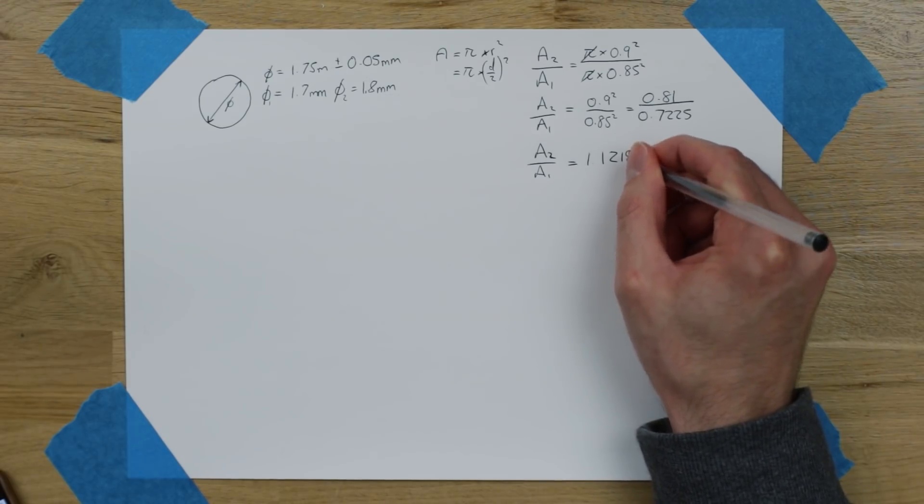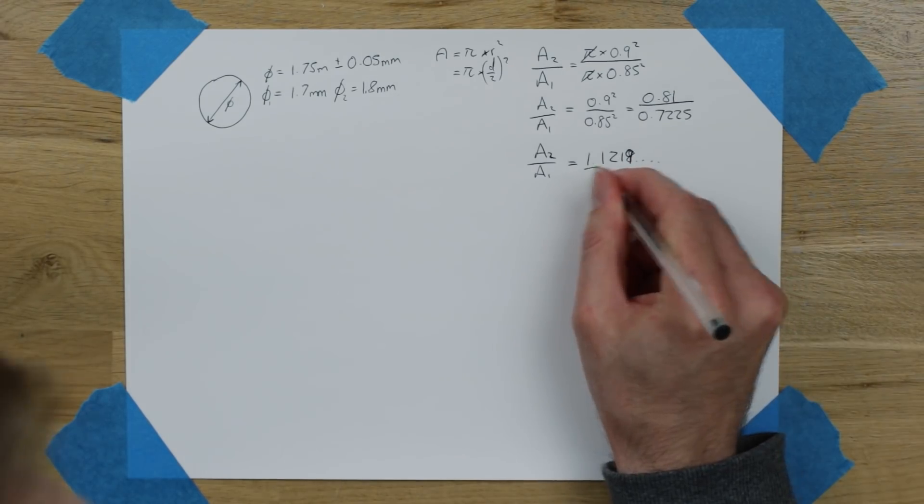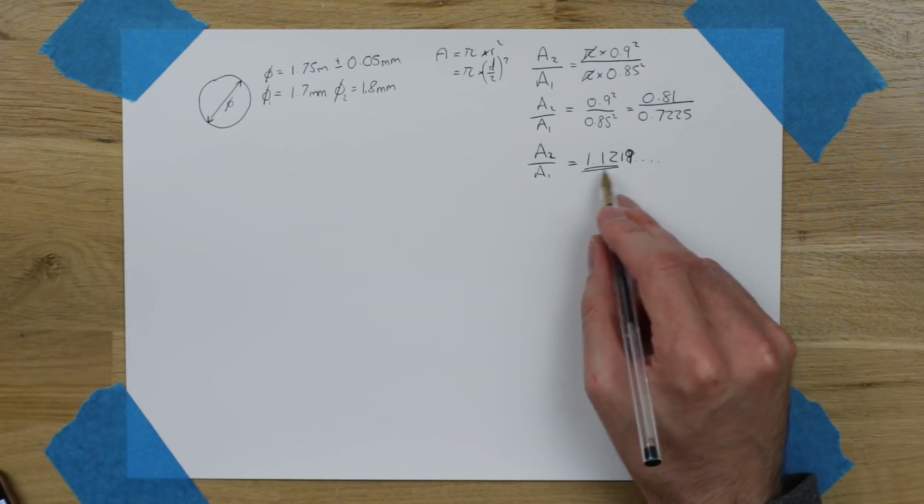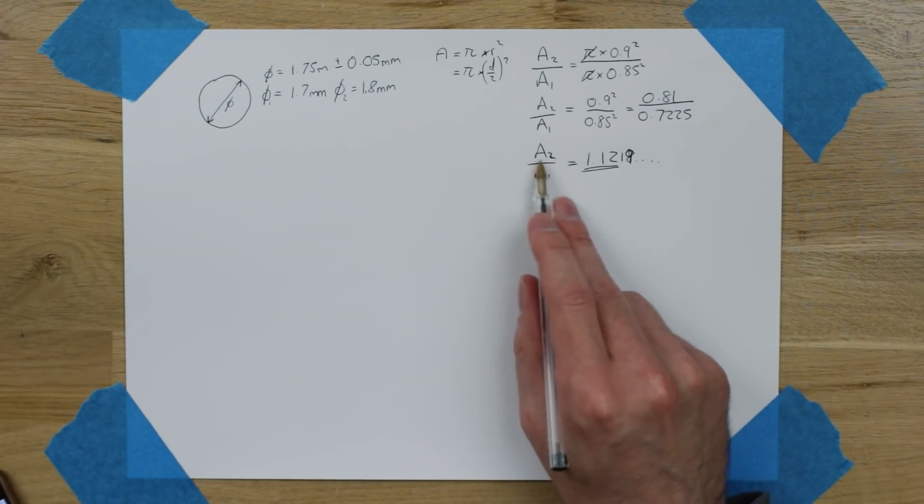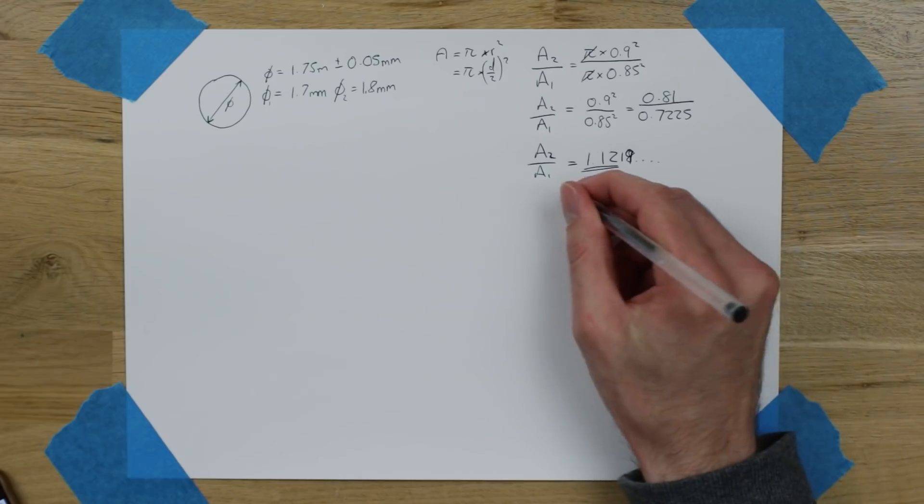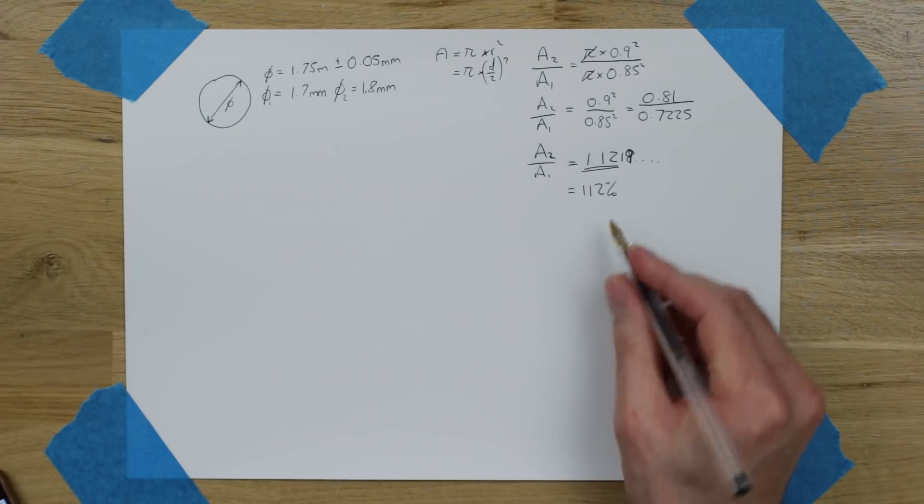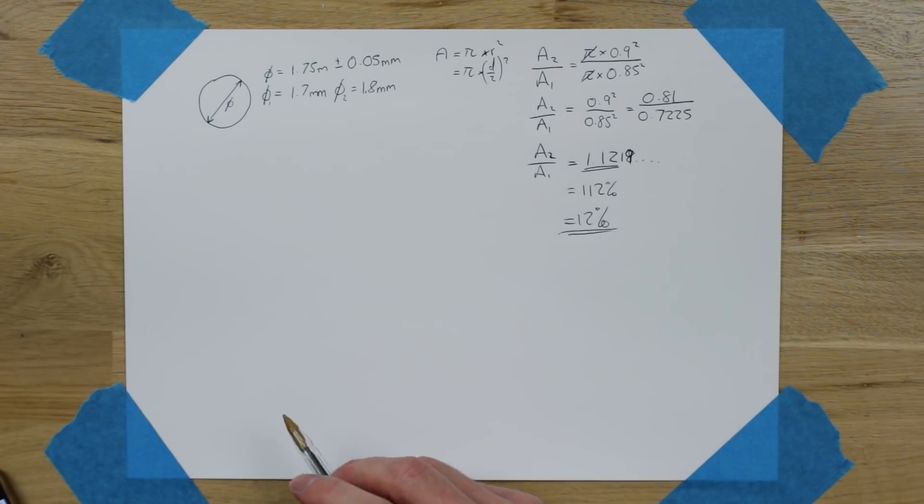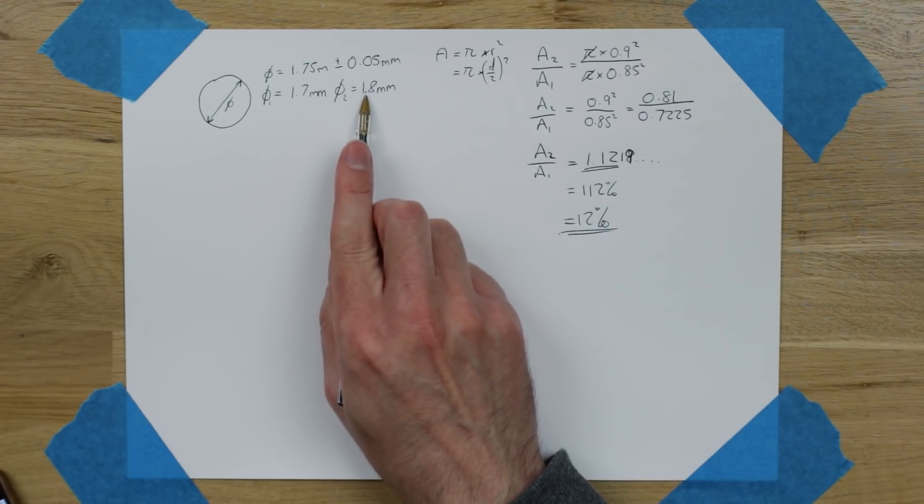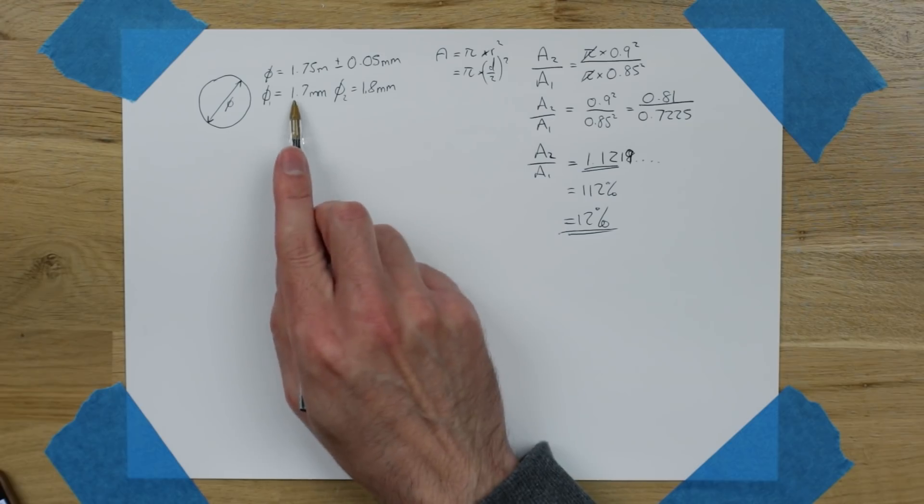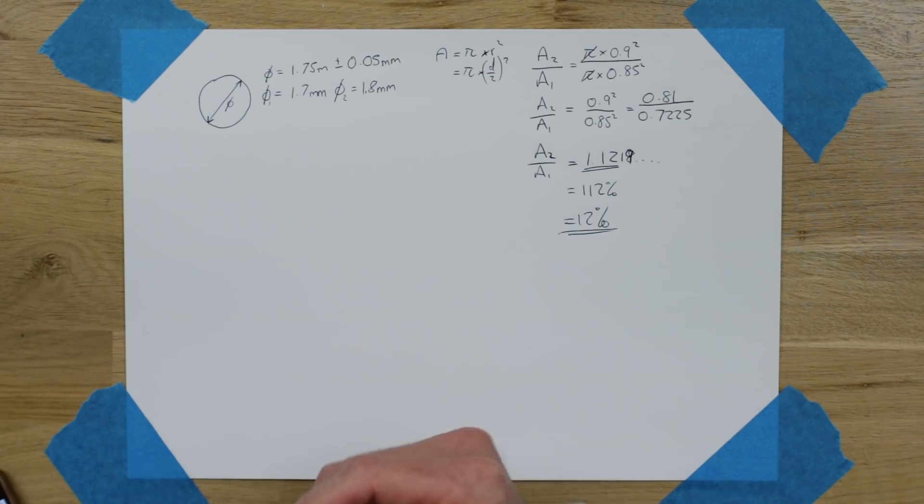Therefore, a2 over a1, the ratio of the areas is 1.1218, etc. Well, actually that should be 1.19 because it's 0.88. Anyway, for us, we're just going to focus on these three figures here. So, 1.12. That means a2 is basically 112% of a1. So, it's 12% larger at a2 than it is at a1. So, this area is 12% more filament than this area. 12% is quite a big change in the amount of filament.